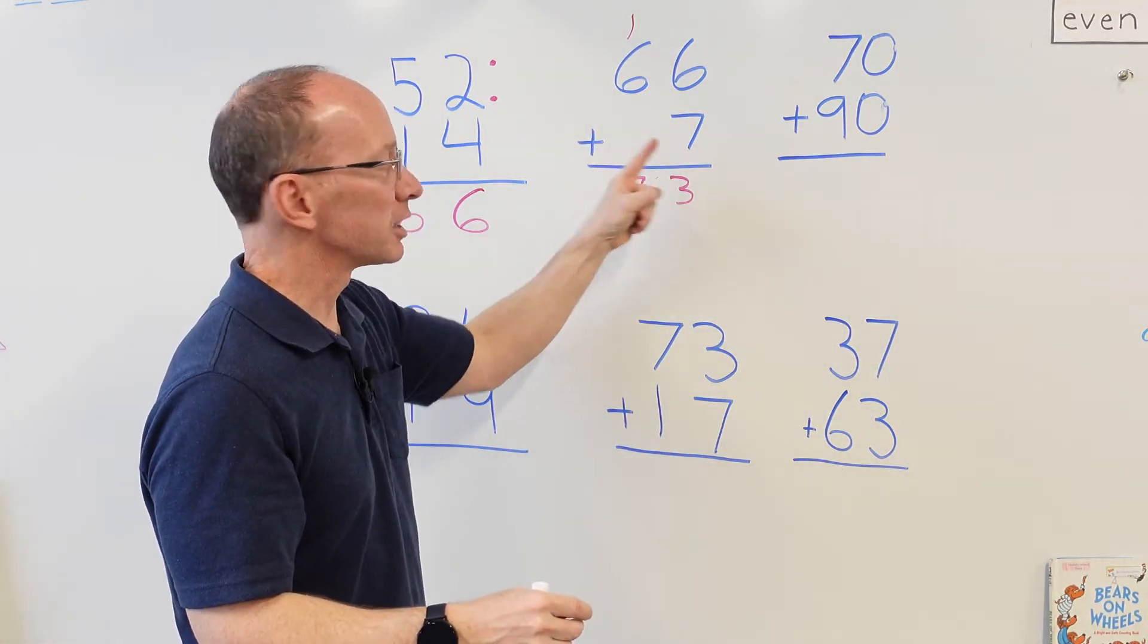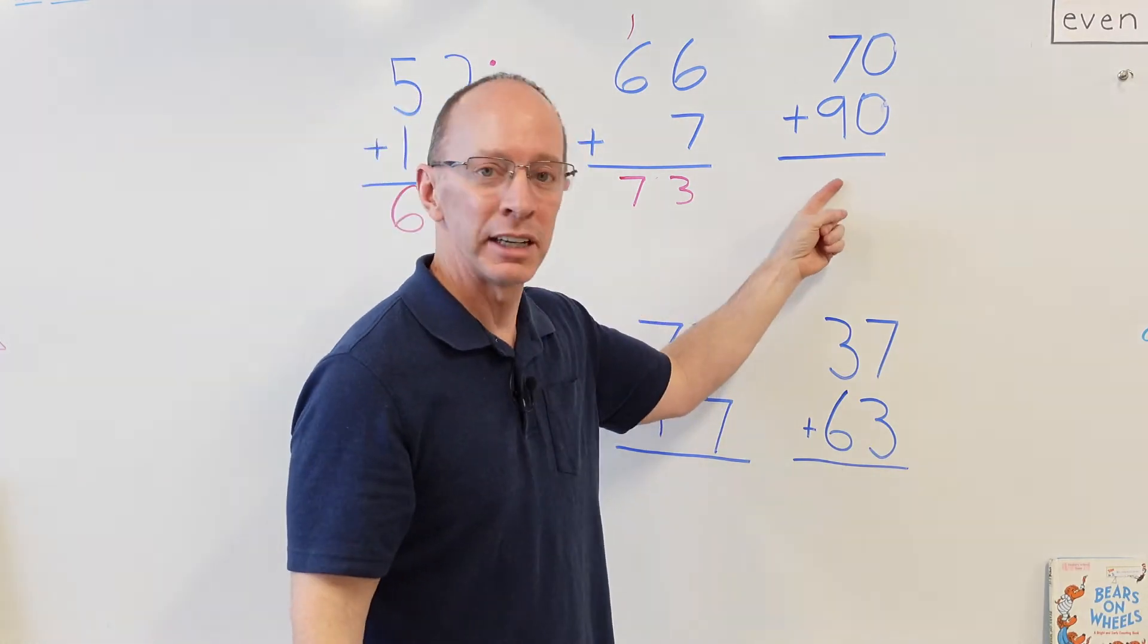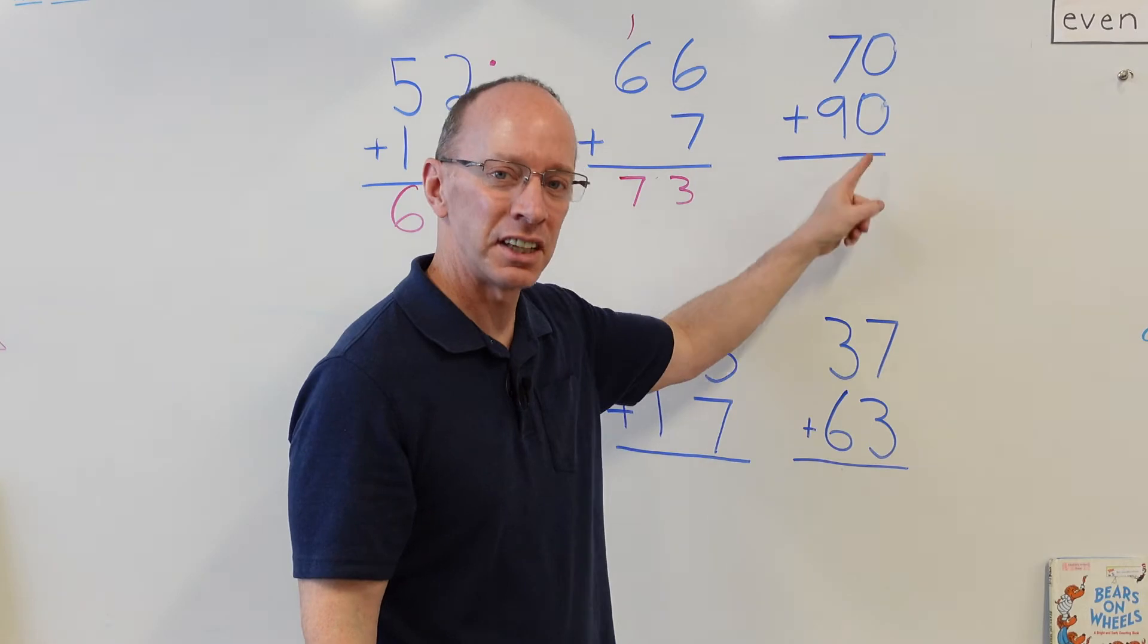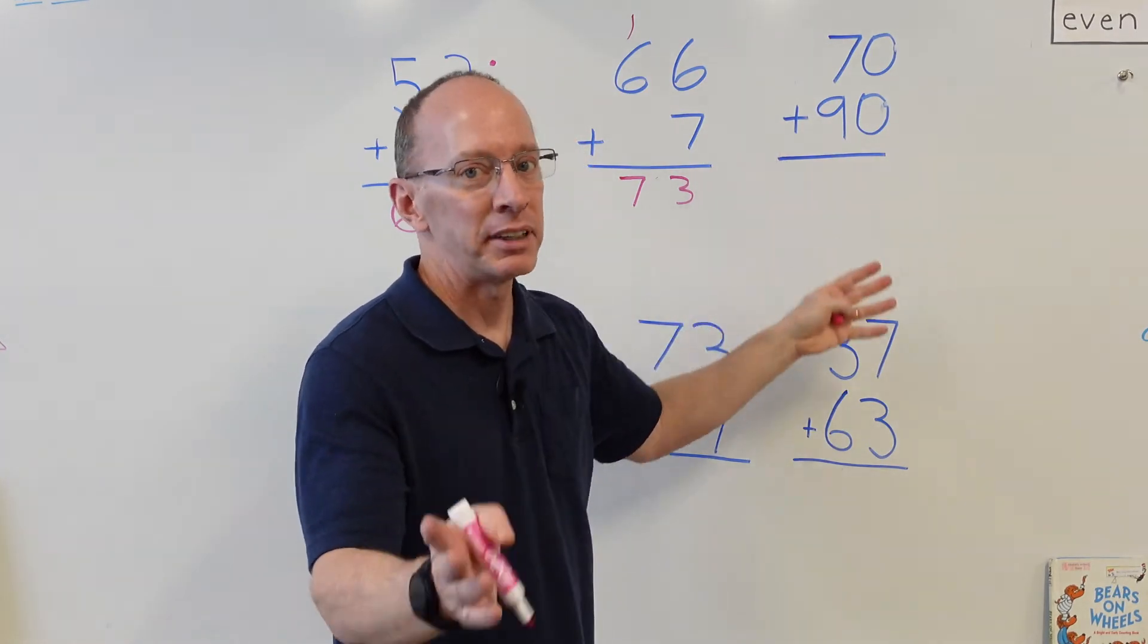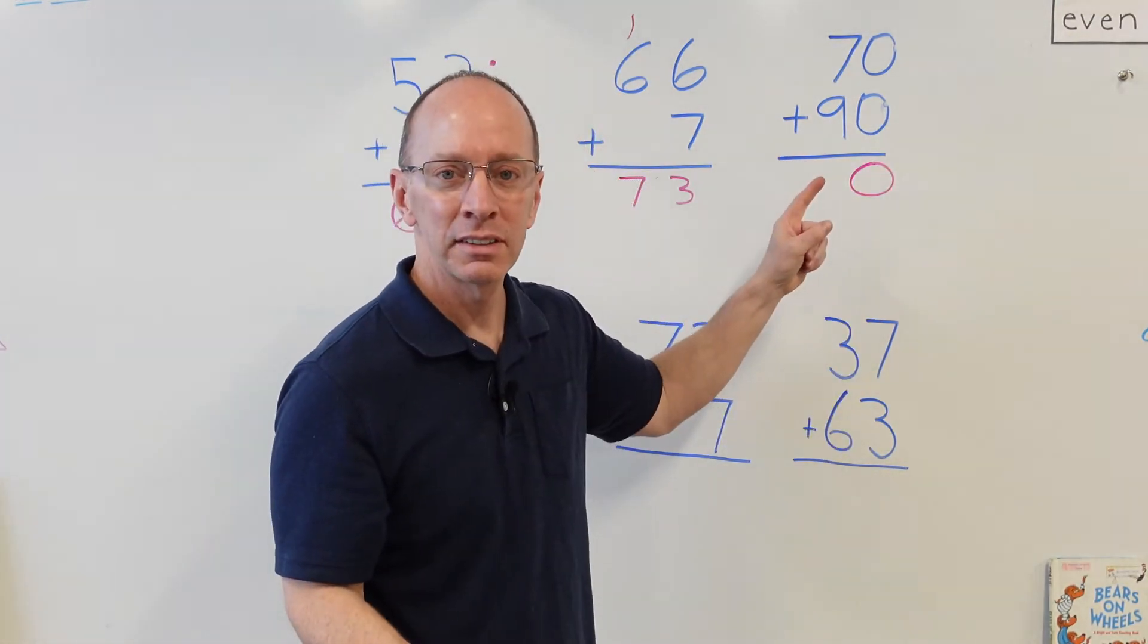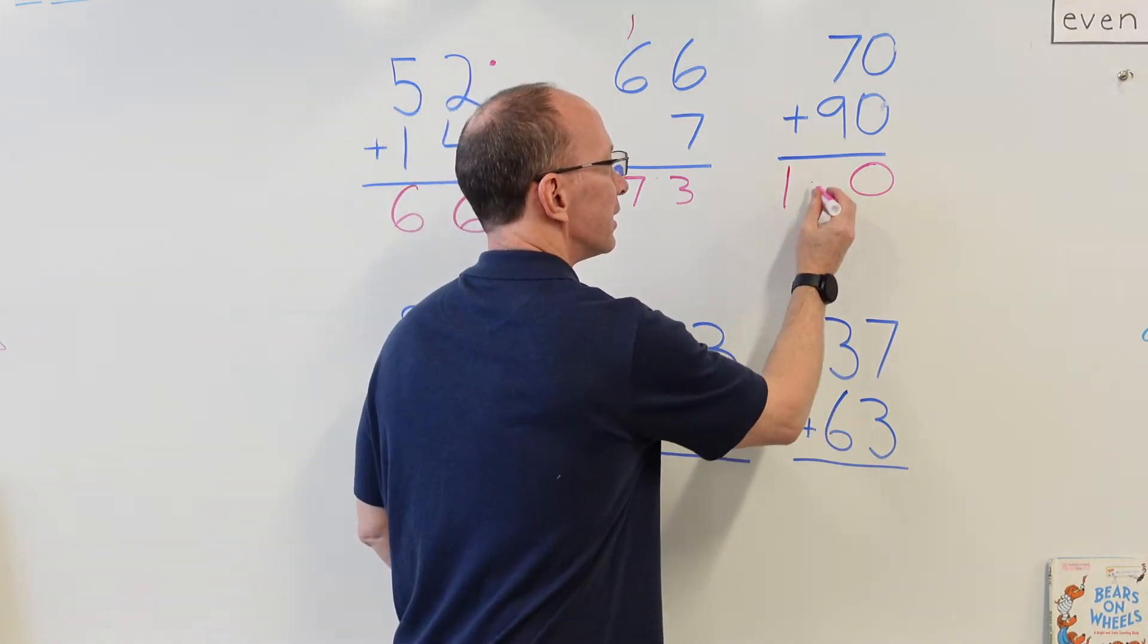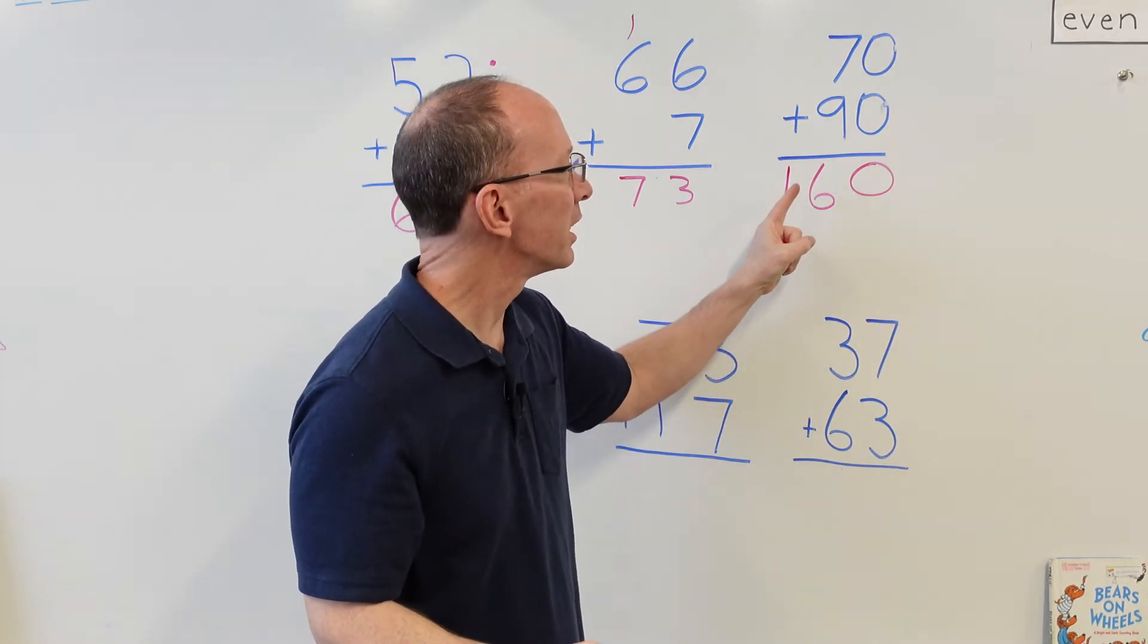Okay, let's go on to this next problem right here. Now you'll notice that both of them have the zero in the ones place. Just drop it down, zero and zero is zero. What is nine plus seven? Nine plus seven, you're right, 16.